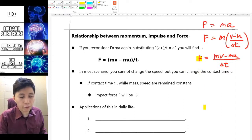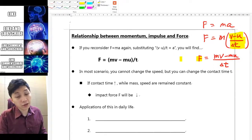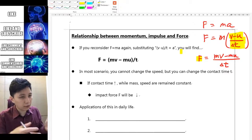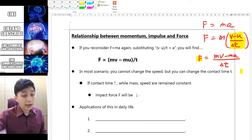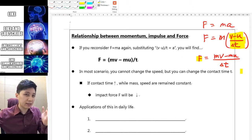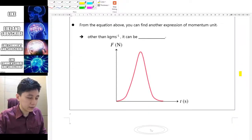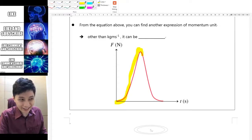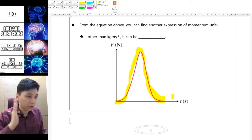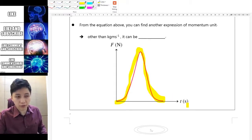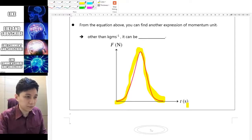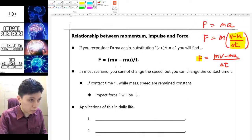Notice that this force should be referred as average impact force because the a that we take, v minus u over t, is an idea of average acceleration only, so the force you calculate is also the average force correspondingly. However in real life, you know that the force, let's say if you just slam someone's face, you find out the force is not constant for sure.